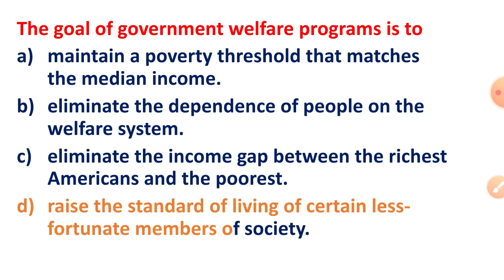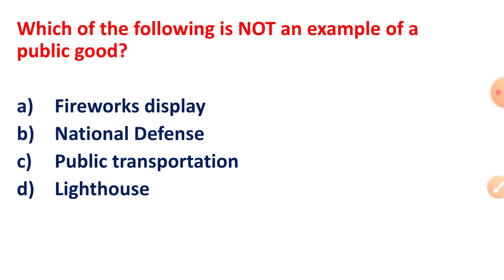Which of the following is not an example of a public good? The right answer is public transportation — it is not an example of a public good.